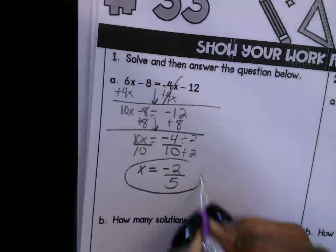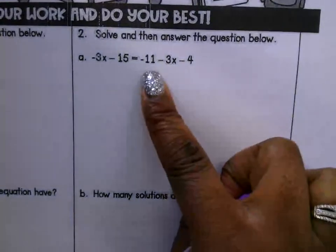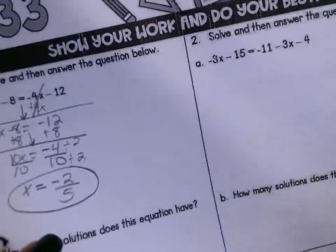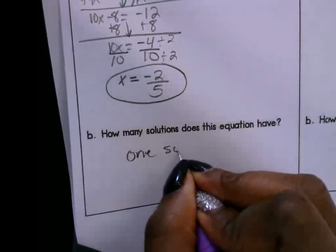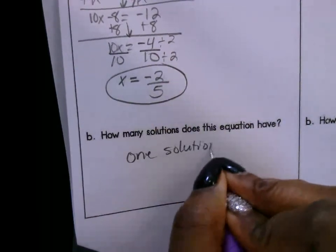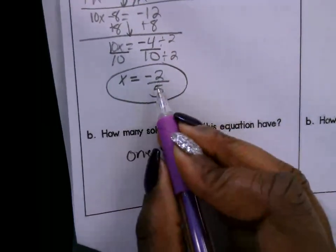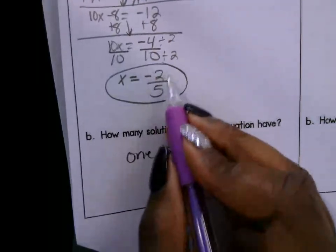Okay, and we do the same thing over here. How many solutions does this equation have? It has only one solution. The solution here is x is equal to negative 2 over 5, and you should be able to do the second one the very same way.